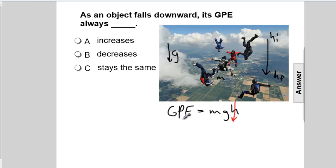If the height goes down, which way does the GPE go? Think about that. Their mass doesn't change. Gravity doesn't change significantly as they fall. If the height goes down, since M and G are constant, GPE will be down.